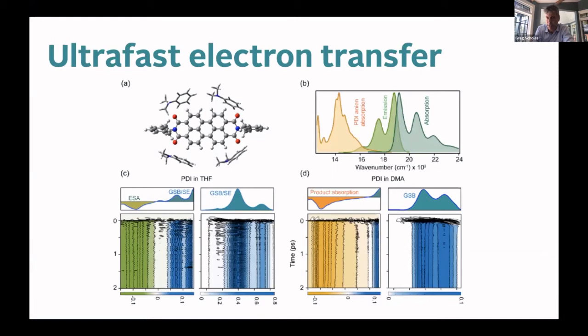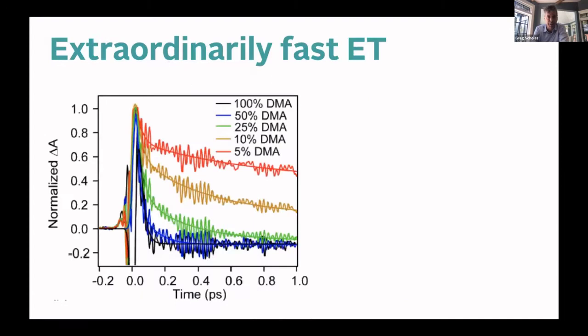We can study the system both in a solvent that doesn't donate the electron and in the electron-donating case. On the bottom left you see ripples in the pump-probe data — the vibrational wave packets generated on the PDI, and they're unperturbed. The experiments on the right are under the same excitation conditions but now with the fast electron transfer. The time constant is around 60 femtoseconds. A dilution experiment shows that as you increase the concentration of dimethylaniline up to pure dimethylaniline, the decay of the reactant is extremely fast — that's the rate of electron transfer. The oscillations are not noise — they're the vibrational wave packets we're interested in.